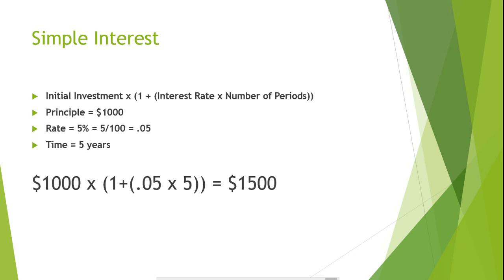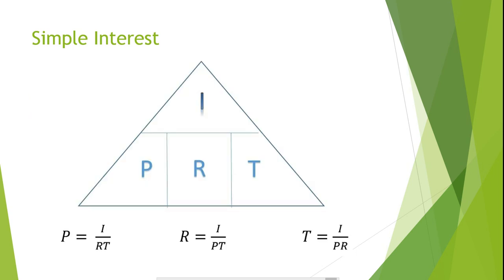Now let's analyze our interest formula to figure out how we can solve for the other variables. We already know how to solve for interest, but what if we need to solve for the rate, periods, or the time? It's actually pretty simple. Let's place all of our variables into a triangle as shown here. Inside the triangle, we have placed our variables from the simple interest formula. All that we need to do to find the formula that will solve for a specific variable is to cover up the variable that we want to solve for.